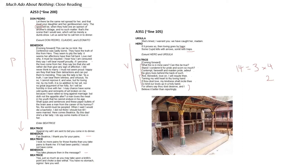Now let's run through the text closely. Firstly, we have this language of hunting. We have Don Pedro saying 'let there be the same net spread for her,' whilst over here Ursula says 'we have caught her,' and Hero says 'we have laid some traps.' This is important because throughout the play, the pursuits of warfare, hunting, and romance are constantly compared to one another and equated — they're all constructed as battles in their own right.